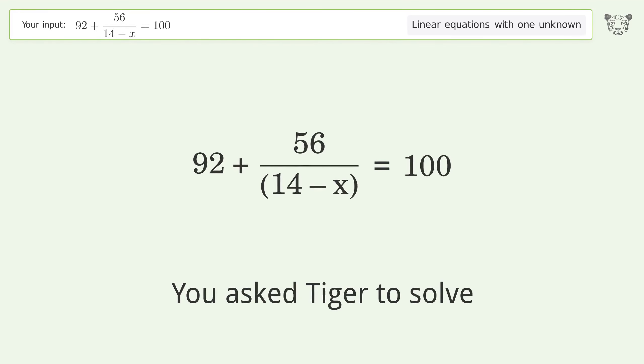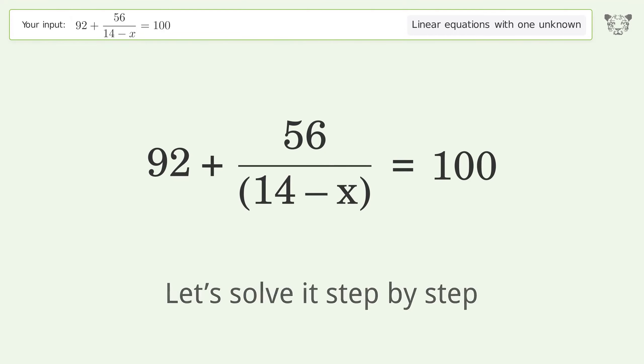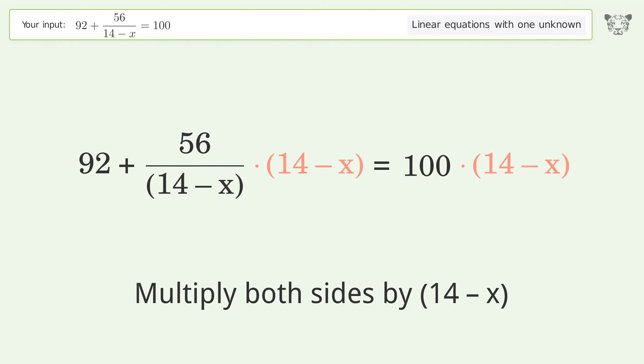You asked Tiger to solve this. It deals with linear equations with one unknown. The final result is x equals 7. Let's solve it step by step: isolate the x, multiply both sides by 14 minus x, expand the parentheses.